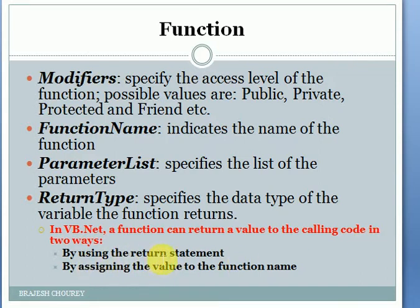In VB.NET, a function can return a value to the calling code in two ways: by using the return statement, or by assigning the value to the function name. These are the basic patterns for the function.